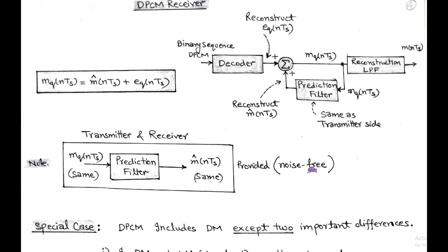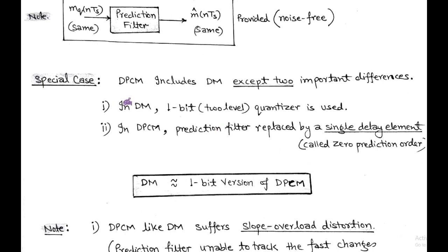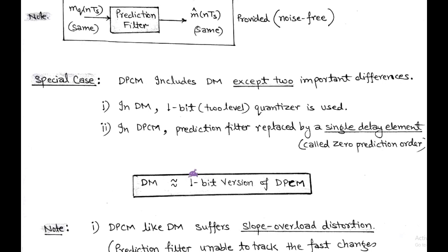In differential PCM, there is a special case: differential PCM is similar to delta modulation except for two important differences. First, in delta modulation, a one-bit or two-level quantizer is used. Second, in differential PCM, the prediction filter is replaced by a single delay element, called zero prediction error. So we can say that delta modulation is a special case of differential PCM — specifically, delta modulation is the one-bit version of differential PCM.